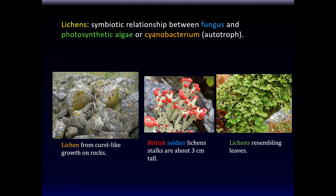Lichens are the symbiotic relationship between a fungus and photosynthetic algae or cyanobacteria, which are also autotrophs — a photosynthetic bacteria. So fungi can have a relationship with basically two or three other kingdoms: the bacterial kingdom, the protist kingdom, and the plant kingdom.